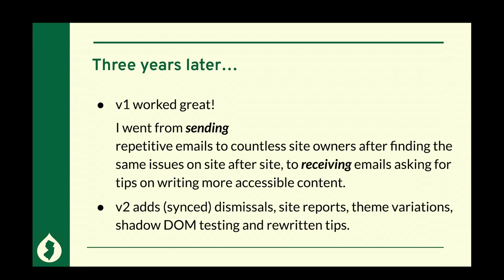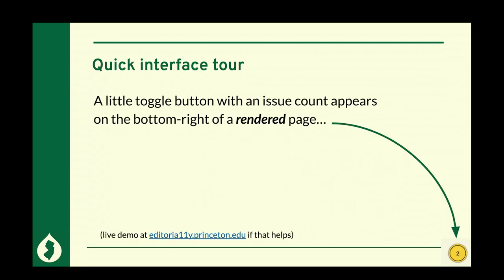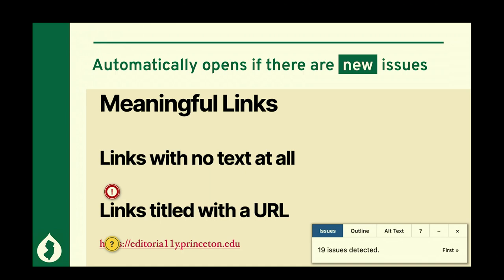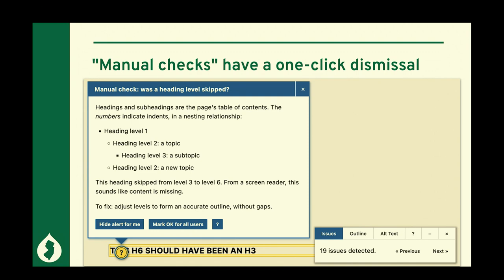Things that require talking to the server really require a Drupal module. So before we get a quick interface tour: you save a page in Drupal, it loads the rendered page, and a little toggle appears in the bottom right-hand corner with an issue count. If there's a new issue — if the issue count on this node changed — it's going to automatically open. It'll pop open a panel and say I detected one issue or 19 issues or whatever, and start dropping tooltips all over the page. There's an exclamation point, a question mark, right in line with what the issues are. This is eye-catching — people that haven't been trained notice when something pops open on their screen.